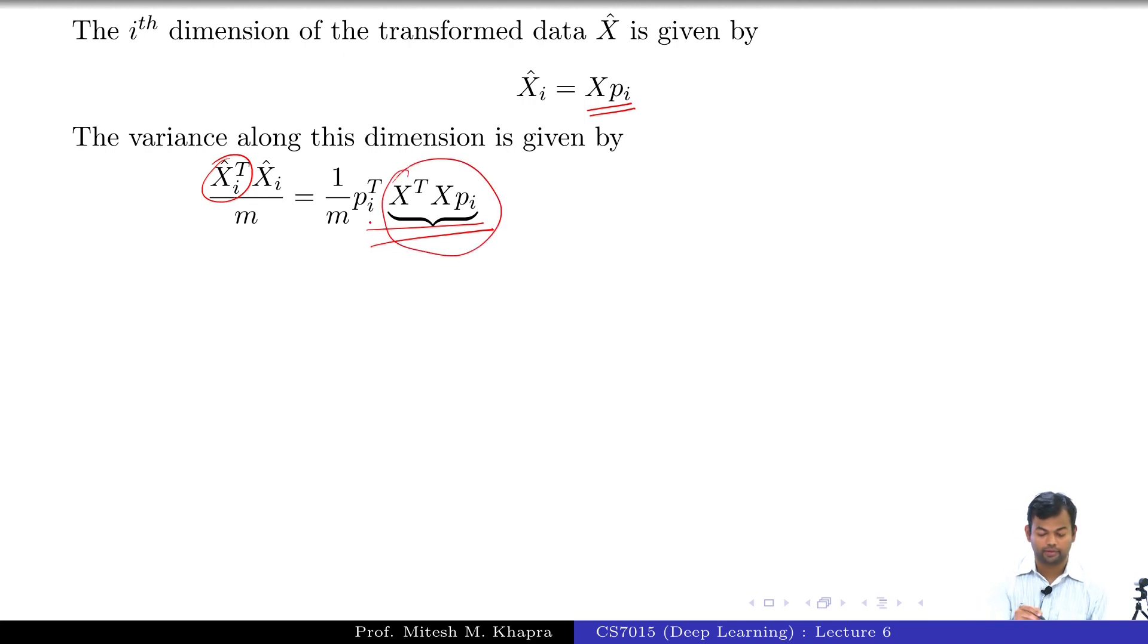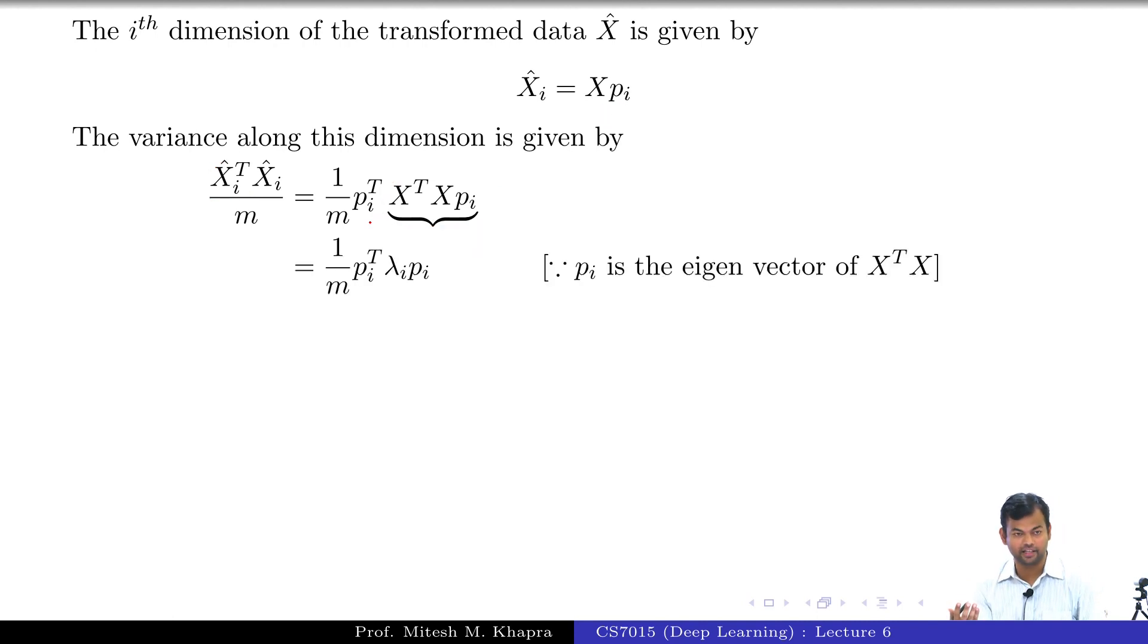Now what is this quantity? This is exactly the moment where I feel like saying Ramayan Khatamogai. What is this quantity? Look at the circle. What is X transpose X times p_i? What is p_i with respect to X transpose X? Eigenvector. So what is this product going to be? Lambda i. Lambda i p_i, is that fine? What is p_i transpose p_i? One.